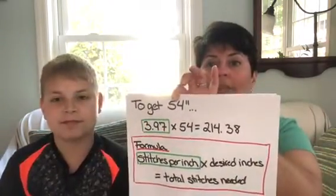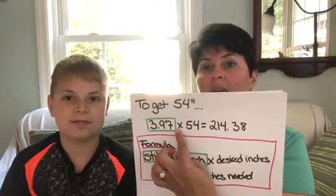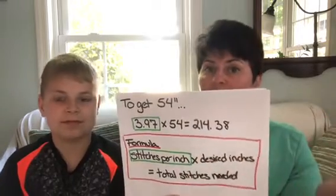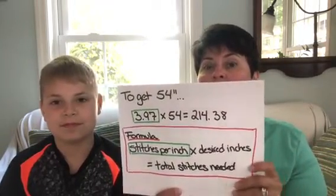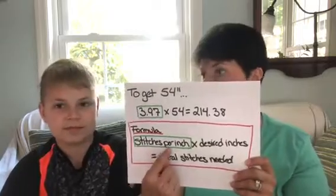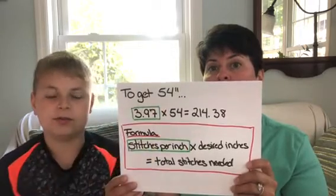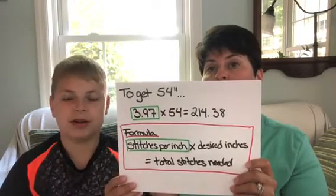The next thing I needed to do was figure out how many stitches I'd need for 54 inches. I took the stitches per inch — 3.97 — and multiplied it by 54, and that gave me 214.38. Obviously we're not going to cast on 0.38 of a stitch, so I was going to have to do a little bit more refinement. The formula is: stitches per inch times how many inches you'd like gives you the total estimated number of stitches — but we're going to have to do some refinement for this pattern.